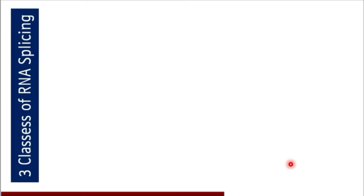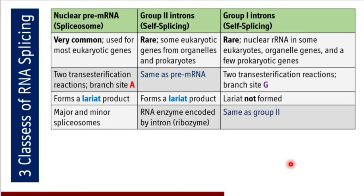Now let us understand the three classes of RNA splicing. The three classes are: nuclear pre-mRNA splicing that is spliceosome-mediated, Group 2 intron, and Group 1 intron. Group 1 and Group 2 are both self-splicing, but nuclear pre-mRNA RNA splicing requires spliceosome — this is used for most eukaryotic genes. It requires two transesterification reactions, has an involvement of branch site A, forms a lariat product, and major and minor spliceosomes carry out RNA splicing.